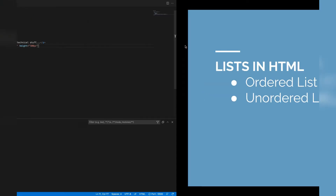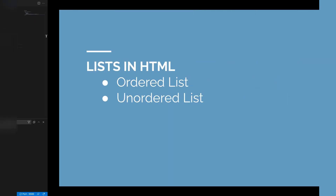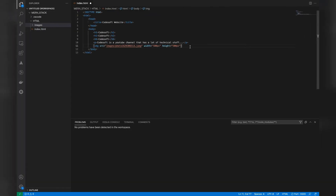The next thing is lists in HTML. There are two types of lists: ordered list and unordered list. An ordered list has numbering for each list item, while an unordered list uses bullet symbols. The UL tag refers to the unordered list, and inside UL we use the LI tag — list item tag — for each item.